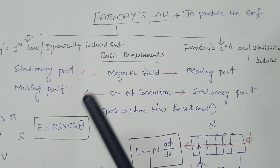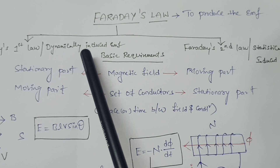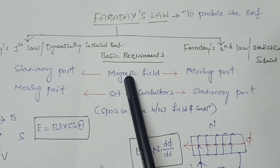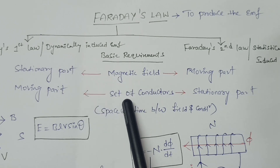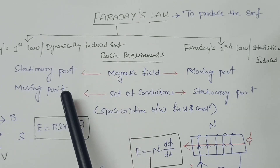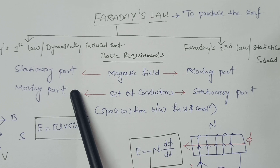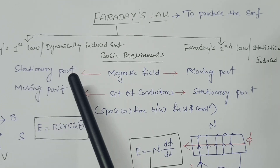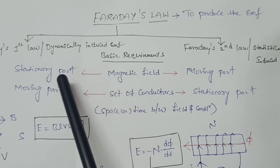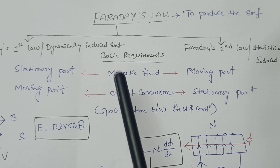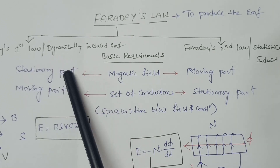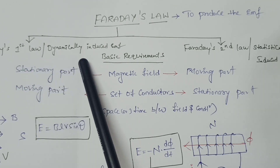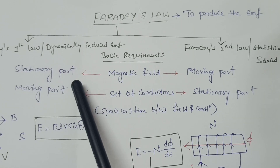In Faraday's first law, the magnetic field is the stationary part and the set of conductors is the moving part. If the magnetic field is in a stationary position and the set of conductors is in a moving position, this gives rise to Faraday's first law, and by using this law we find the induced EMF.